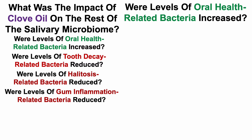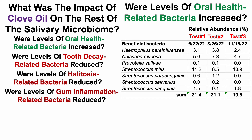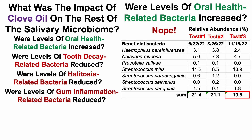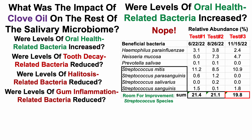Looking at Bristle's definition of beneficial bacteria — mostly non-nitrate-reducing bacteria, with the exception of Neisseria mucosa — for the first two tests I was at about 21% of all microbes in my saliva from these seven beneficial bacterial species. For test number three, it was still in that ballpark at 19.8%. So they were definitely not increased with the addition of clove oil. I do have room for improvement with four Streptococcus species, and we'll see more on that later.